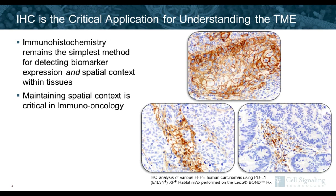IHC remains the critical application for understanding the tumor microenvironment, as it allows researchers to detect biomarker expression while maintaining spatial context within tissues. This is crucial for looking at variables such as co-localization of certain biomarkers and proximity of different cell types. Not only can we phenotype immune cells within the TME by IHC, but we can also understand what compartment they reside in. For example, PD-L1 is an immunosuppressive marker expressed on many cell types — Western blot could tell you it's present, but once you homogenize the tissue you lose context. IHC reveals whether PD-L1 is on tumor cells, myeloid cells, or T-cells within the stroma.